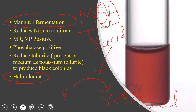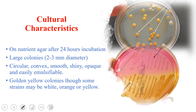Staphylococcus aureus can also reduce nitrate into nitrite. It is methyl red positive and Voges-Proskauer positive. It also produces phosphatase enzymes. Additionally, Staphylococcus can reduce tellurite, producing black colonies — if potassium tellurite is present in the medium, the colonies will appear black in color.